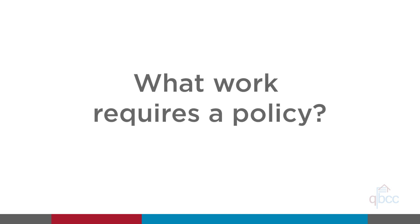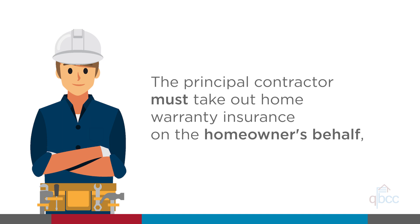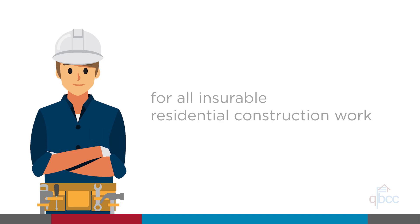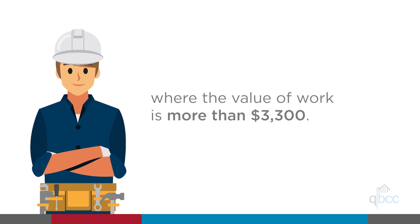What work requires a policy? As explained in video 1 in this series, the principal contractor must take out Home Warranty Insurance on the homeowner's behalf for all insurable residential construction work, where the value of the work is more than $3,300, and that includes cost of materials, even if you didn't provide them, labor, and GST.